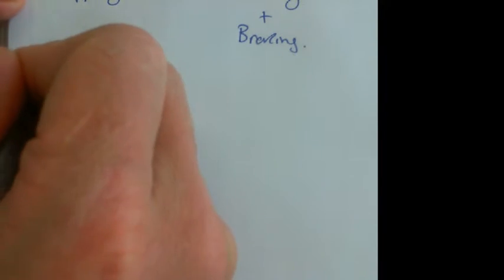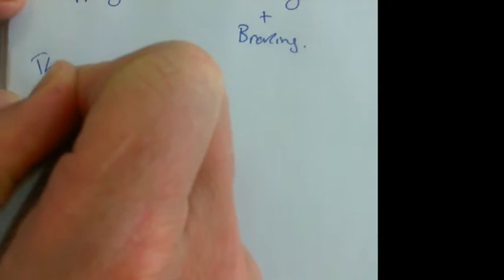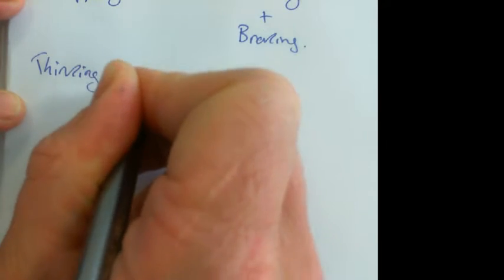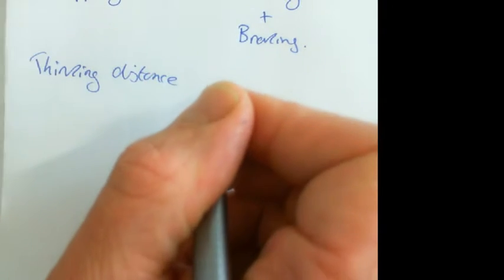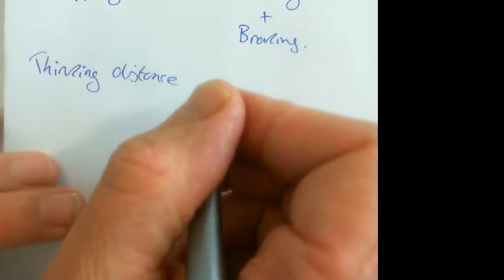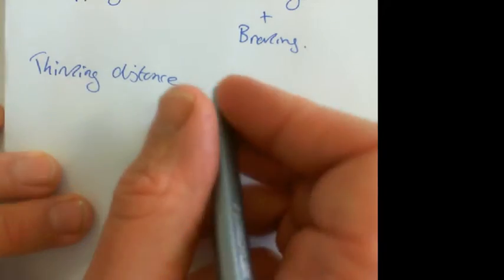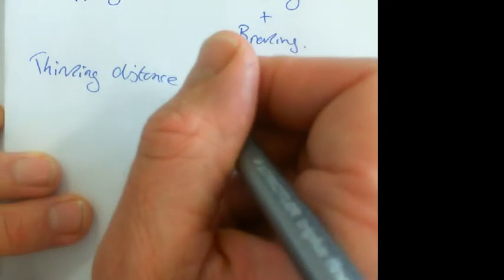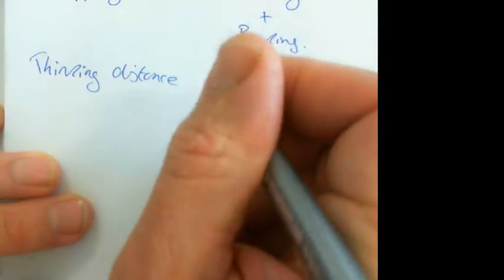What is thinking distance? Thinking distance is equal to the distance traveled by the vehicle in the time it takes to react. This is the time before the brakes are pressed.